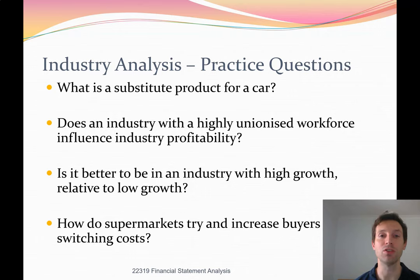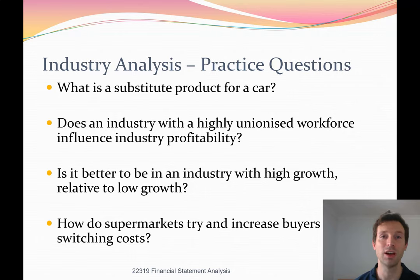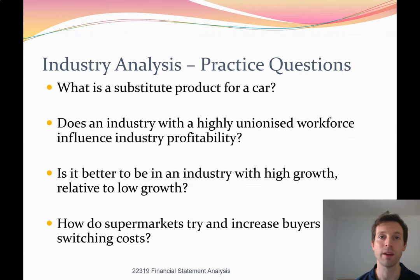How do supermarkets try to increase buyer switching costs? As a customer, you can easily walk into a Coles or Woolworths supermarket. Supermarkets try to build loyalty: many offer petrol discounts if you shop with them — if you shop with Woolworths, you get a discount at the Woolworths petrol station, linking you to their product and building a switching cost. They also use loyalty points and membership discounts. These are all ways of keeping customers loyal, building in switching costs, and maintaining profitability in an otherwise very competitive industry. Costco builds switching costs by requiring customers to pay a membership fee before they can shop.